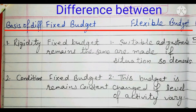The first difference is rigidity. Under fixed budget, the fixed budget remains the same — as we have made it earlier, we have to work with the fixed budget, so it remains the same. Whereas under flexible budget, suitable adjustments are made if the situation demands. There is flexibility; if there is any condition or situation requiring a change in our budget, then we can do it.